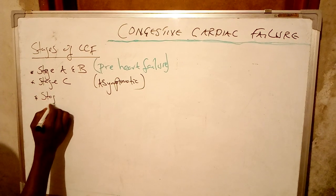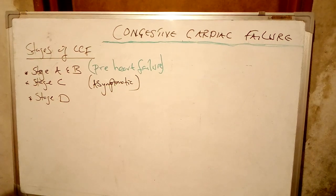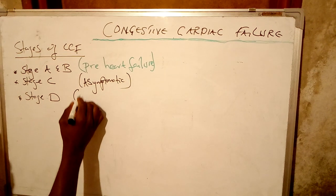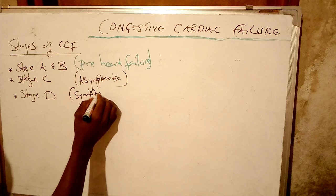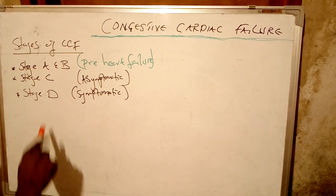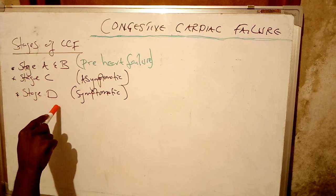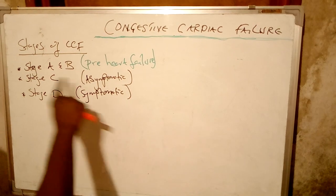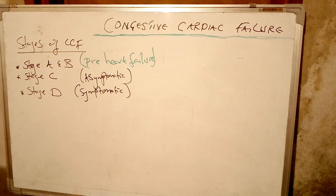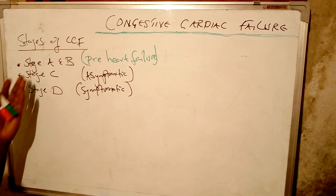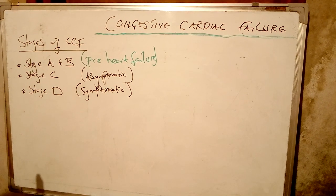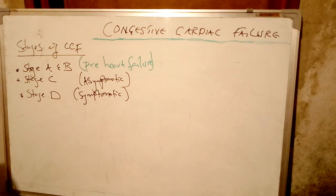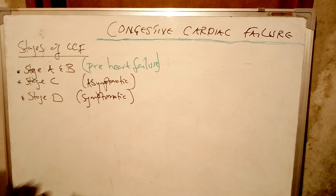Patients who are in stage D are those whose heart structures are distorted or destroyed, and these are symptomatic patients with congestive cardiac failure. Stage D is the most severe stage of CCF — during this stage, the patient actually has congestive cardiac failure. Stage C means the patient's heart structures are damaged but not severely, and they are symptomatic. Stage A and B is the pre-heart failure stage, meaning the patient has predisposing factors that can lead to CCF but has not yet developed it.